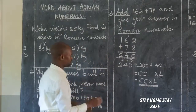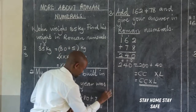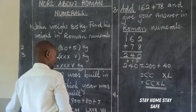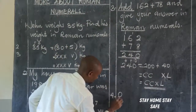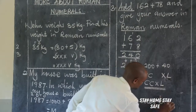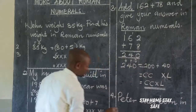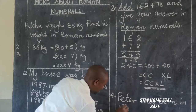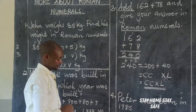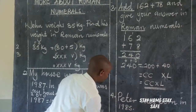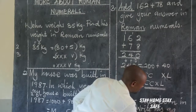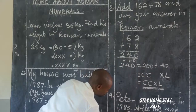Let's look at one more example. Number 4: Peter was born in 1985. Write his age in Roman numerals.